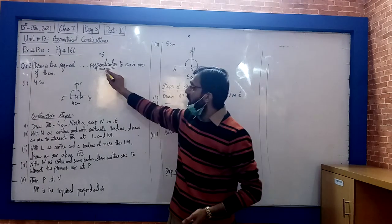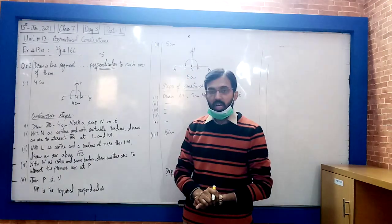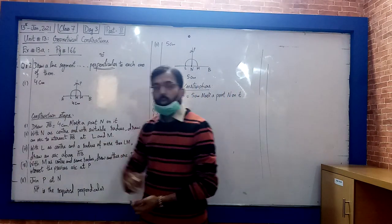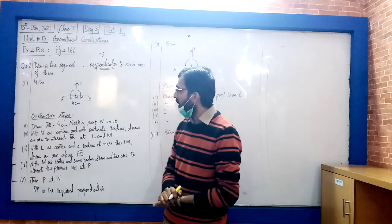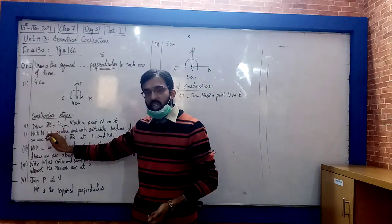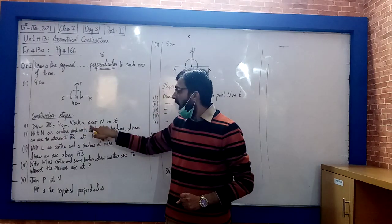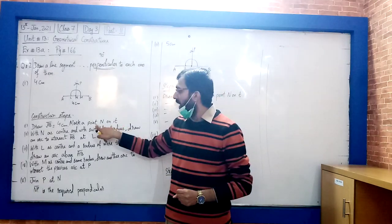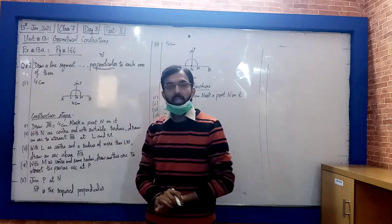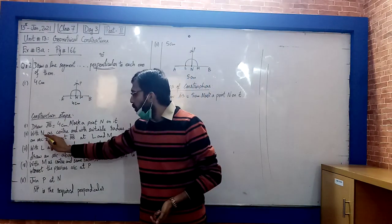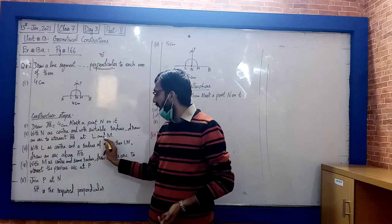So we will see the steps that we have already drew. Our first step is to draw a line segment of 4cm. I have to draw a 4cm line segment AB. Let me choose a point here. With N as center and with suitable radius, draw an arc to intersect AB at L and M.